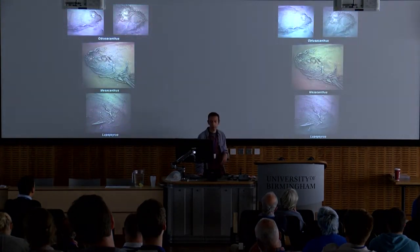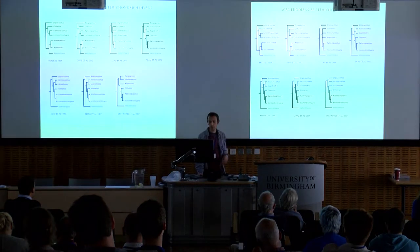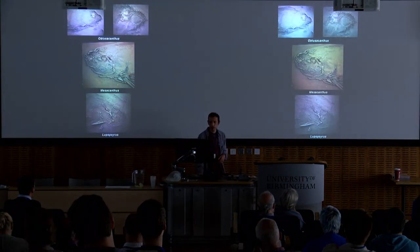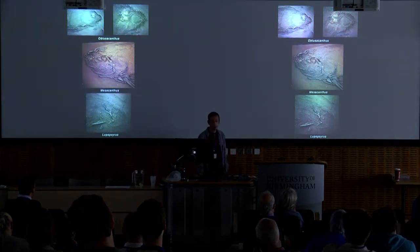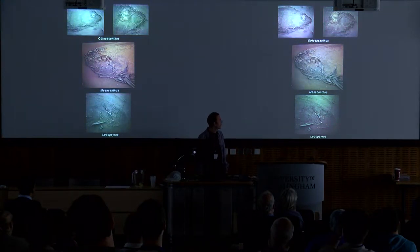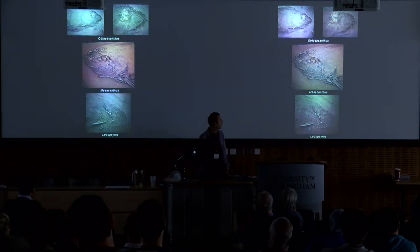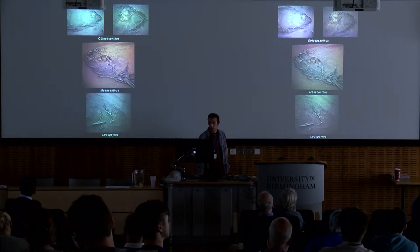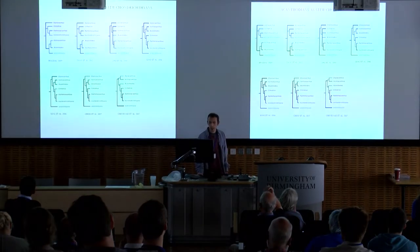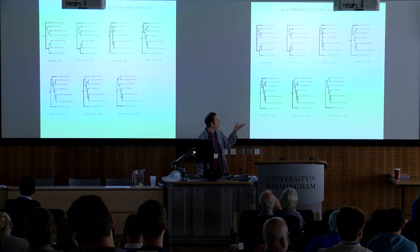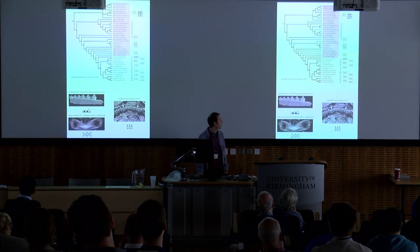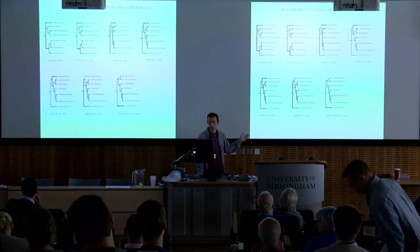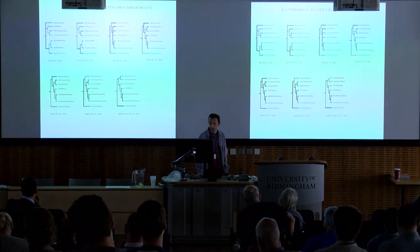In stem group chondrichthians, some acanthodians identified in the past ten years have been recognized as stem group chondrichthians. This is what they look like — they have a weakly mineralized endoskeleton, but the exoskeleton is quite extensive, represented by spines, scales, and tesserae. Most phylogenies now agree that acanthodians form a paraphyletic assemblage of stem chondrichthians.